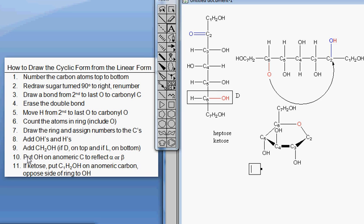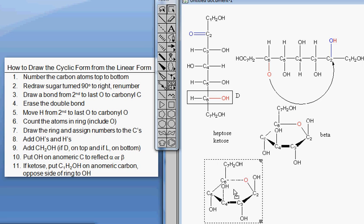And now we're on step 10. Put the hydroxyl on the anomeric carbon to reflect alpha or beta. I'm going to make beta here. So they are cis to each other, both up. That is beta. And then I'm going to copy and paste so you can see what alpha will look like.